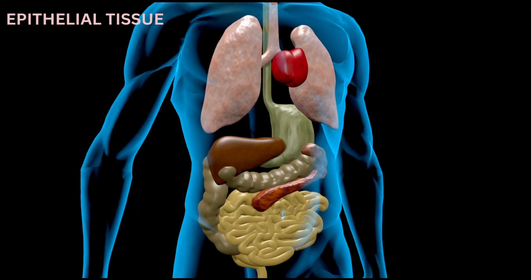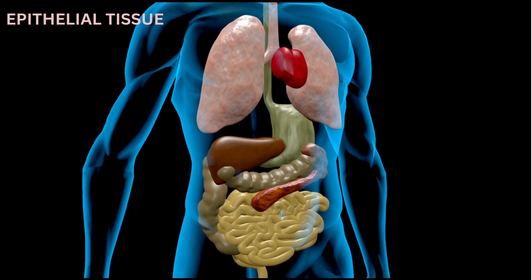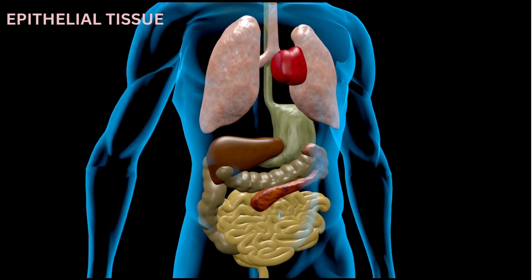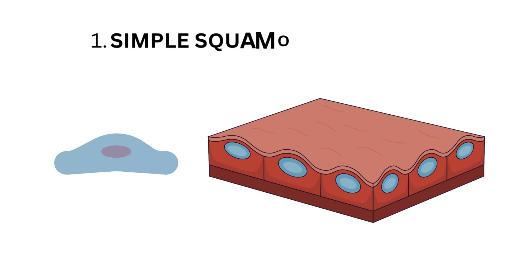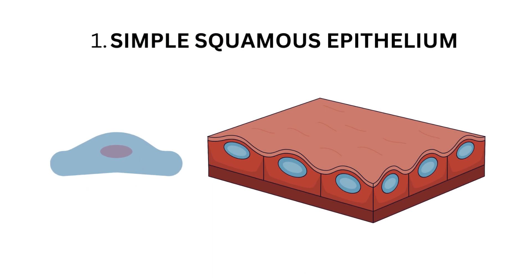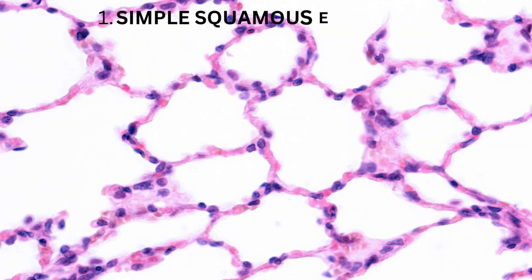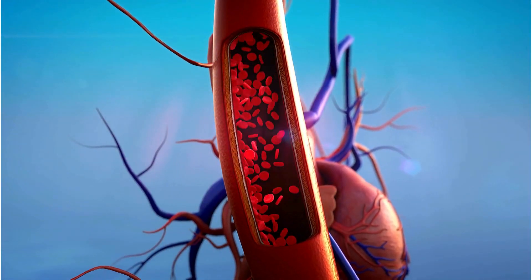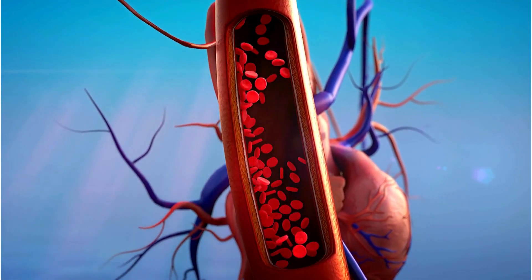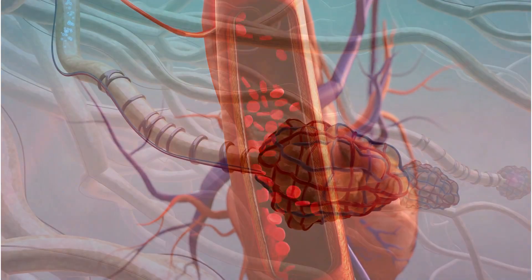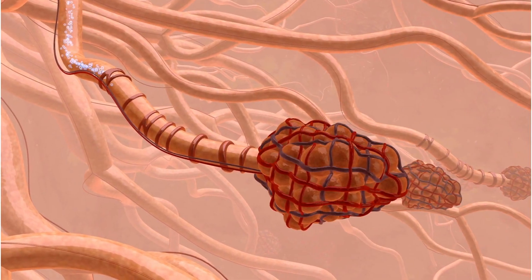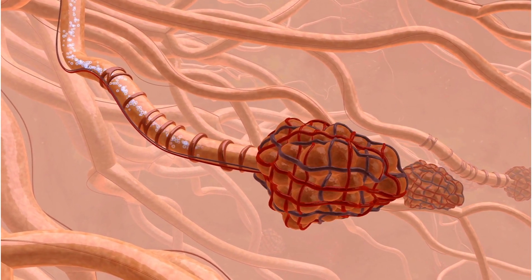The main types of epithelial tissues include: Simple squamous epithelium — a single layer of flat, scale-like cells, found in areas where diffusion and filtration are important, such as the lining of blood vessels (endothelium) and air sacs in the lungs.